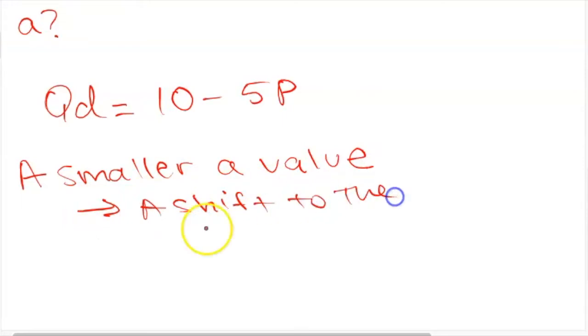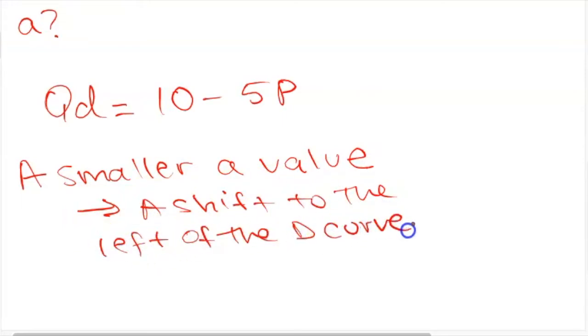So when the a value decreases there has been a shift to the left of the demand curve, and if the a value increases there's a shift to the right of the demand curve.